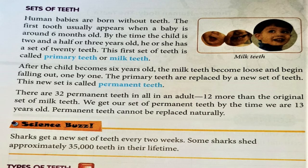And in their place, a set of new, bigger and stronger teeth grow. This second set of teeth that comes after the temporary teeth fall are called the permanent set of teeth, which we use through our whole life. There are 32 permanent teeth in an adult. We get a set of permanent teeth by the time we are 13 years old.